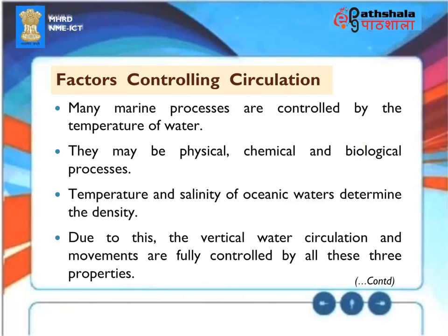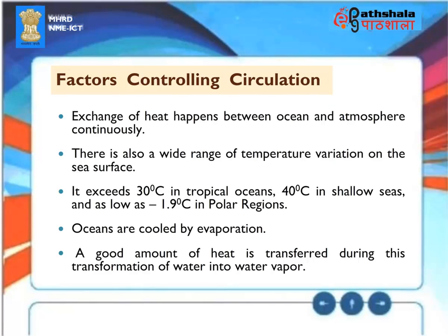Factors Controlling Circulation: Many marine processes are controlled by the temperature of water — physical, chemical, and biological processes. Temperature and salinity of oceanic waters determine the density, and due to this, the vertical water circulation and movements are fully controlled by all three properties. There is also a wide range of temperature variation on the sea surface — it exceeds 30°C in tropical oceans, 40°C in shallow seas, and as low as −1.9°C in polar regions.